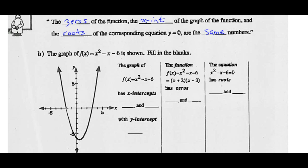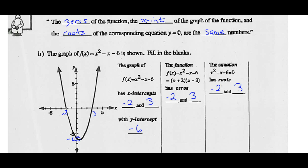The graph of f(x) = x² - x - 6 is shown. The graph has x-intercepts at -2 and +3, and the y-intercept at -6. The function f(x) = x² - x - 6 has factored form f(x) = (x + 2)(x - 3). It has zeros at -2 and +3, and this equation has roots of -2 and +3. They're all the same.